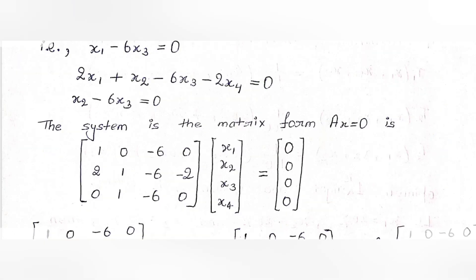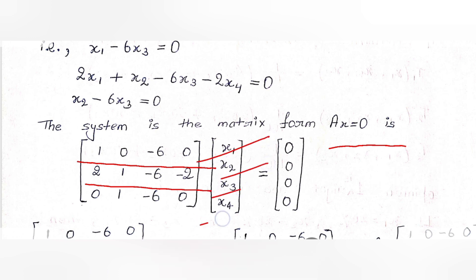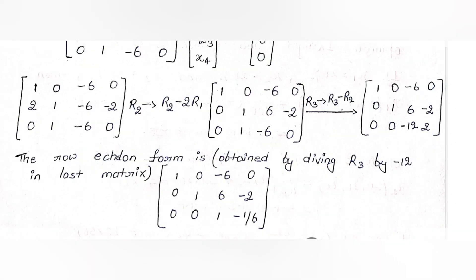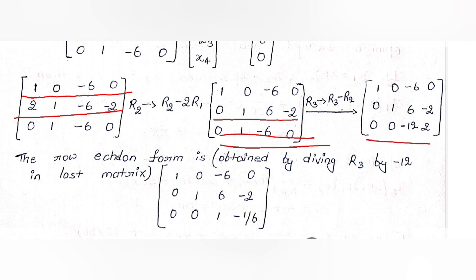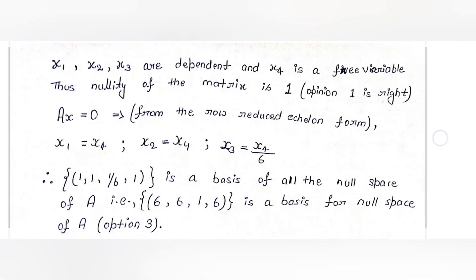The system is of the form Ax = 0, giving a 3×4 matrix with unknowns x1, x2, x3, x4 equal to the zero vector. We perform row operations: multiply R1 by 2, subtract from R2, then divide R3. The row echelon form is obtained by dividing R3 by −12 in the last step.